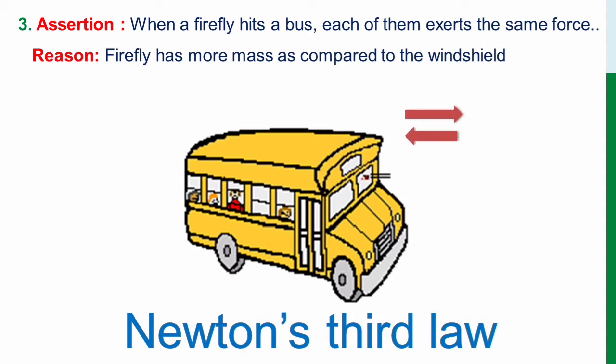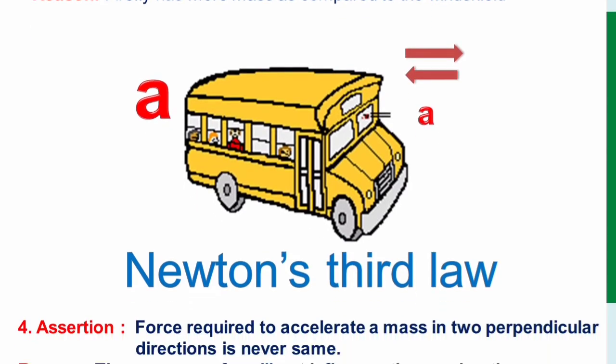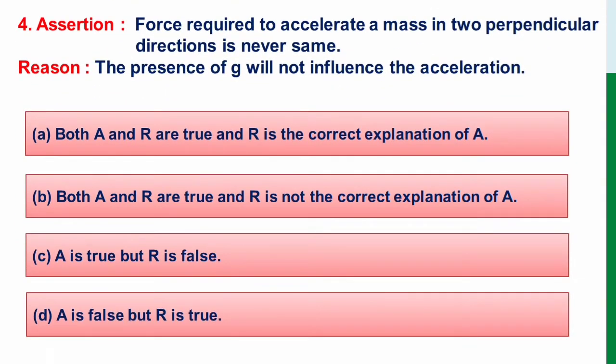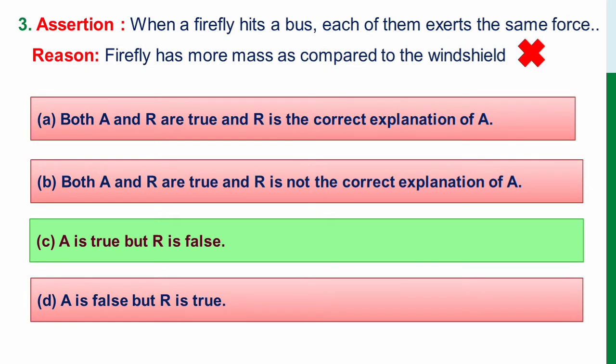But for the same force, a heavier object will give more acceleration than a lighter object. And here we know that firefly has very very less mass as compared to the windshield. So this itself makes us understand that the reason is false and assertion is true. So the correct option or the correct answer for this question is option C. Assertion is true but reason is false.